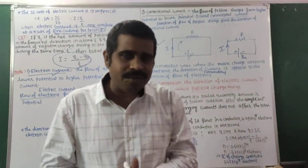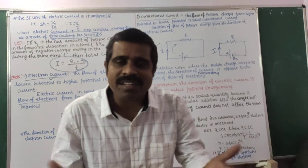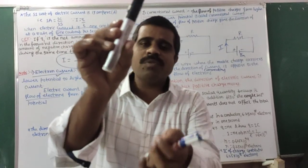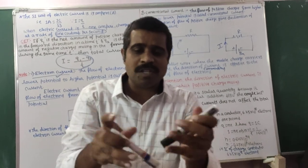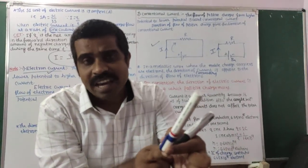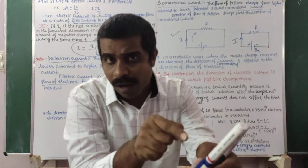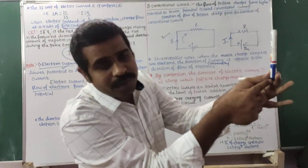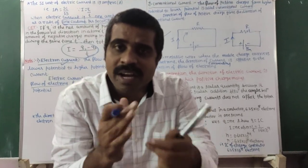Electric current is a scalar quantity because it follows scalar addition. This is one conductor through which 5 ampere current flows, and another conductor through which 7 ampere current flows. They meet at a point called a node or junction. The total current at that junction is 5 plus 7 equals 12 ampere. Even if the angle between the two conductors changes, the total current remains 12 ampere.